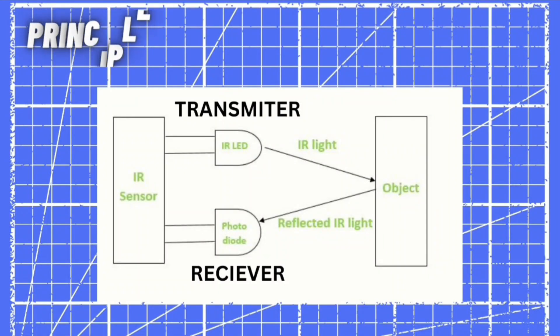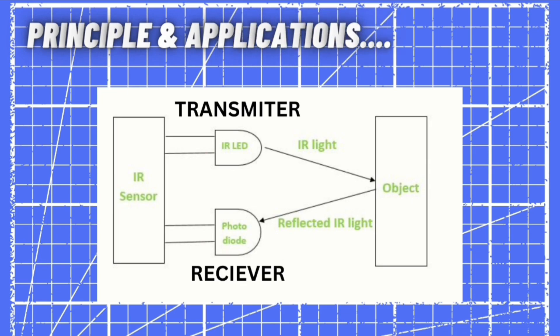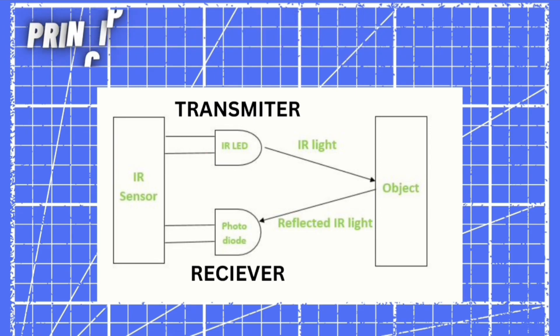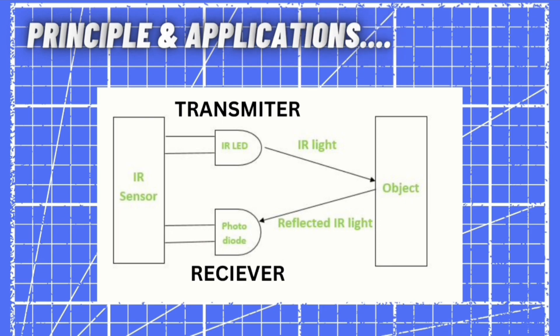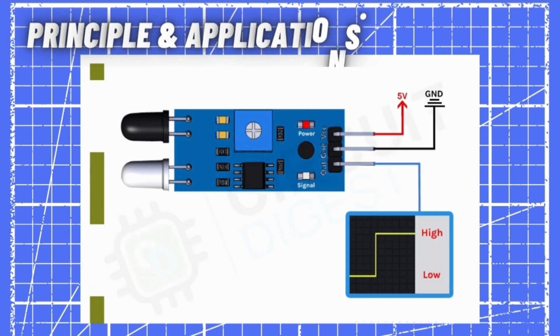Now let's talk about the principle and application of an IR sensor. Here you can see there is an IR sensor with an object placed in front of it. When the IR LED transmits infrared light towards an object, the object reflects the IR light towards a photodiode or receiver. The wavelength of the transmitted infrared light is the same as the wavelength the photodiode detects. After the receiver receives that light, there is a change in voltage and resistance inside the IR sensor. The op-amp comparator IC then takes that analog signal and converts it into a digital signal, giving us the output through the output terminal of the IR sensor.